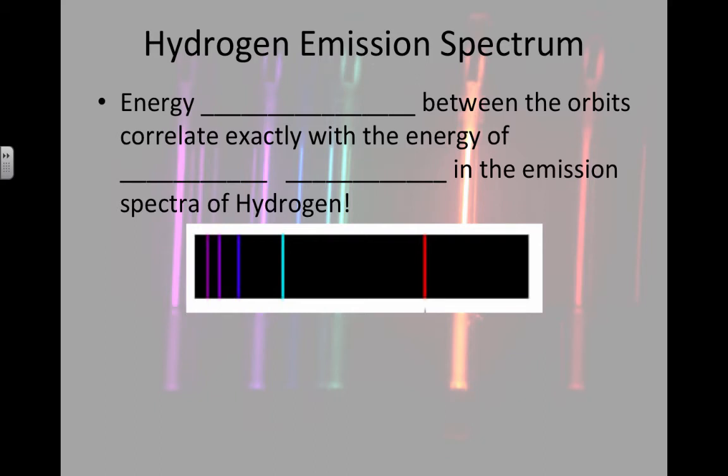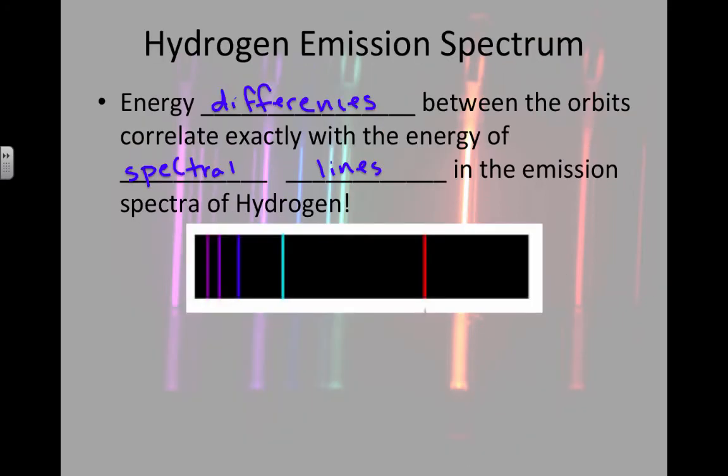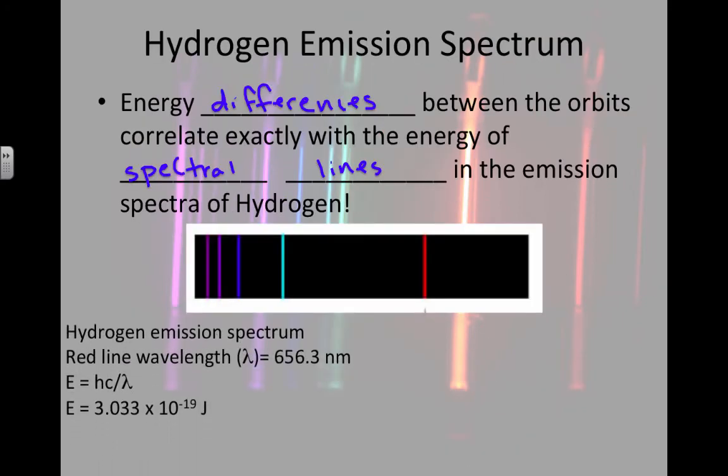If we're specifically looking at the emission spectrum for the atom hydrogen, then we see that energy differences between the orbits correspond exactly with the energy of the spectral lines in the emission spectrum of hydrogen. So if we were looking back at the difference between energy level one and energy level two, then the difference in these energies when we subtract them, we would see that that amount of energy corresponds to a certain color or wavelength in the hydrogen emission spectrum.